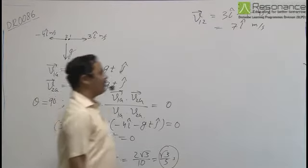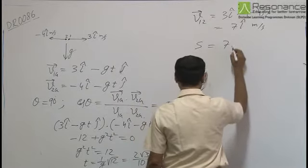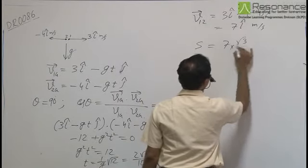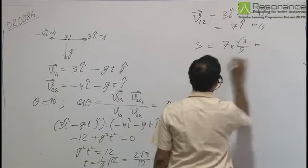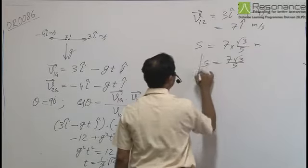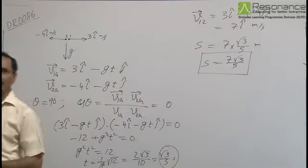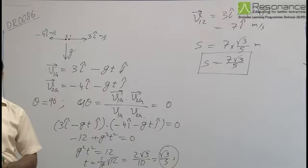So after a time root 3 by 5 seconds, the separation between them will be 7 into root 3 by 5 meter or 7 root 3 by 5 meter, which is the separation when velocity vectors are perpendicular.